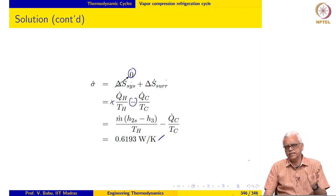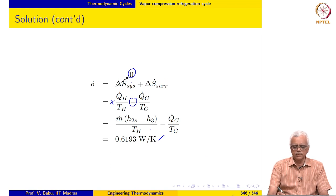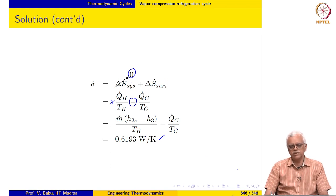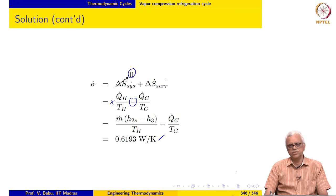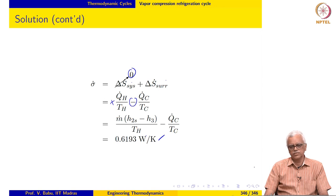In the previous two examples, we did all the calculations on a per unit mass flow rate basis. Here mass flow rate is given. This comes out with units of Watt per Kelvin. This is the rate at which entropy is generated in the universe as a result of operation of this cycle.